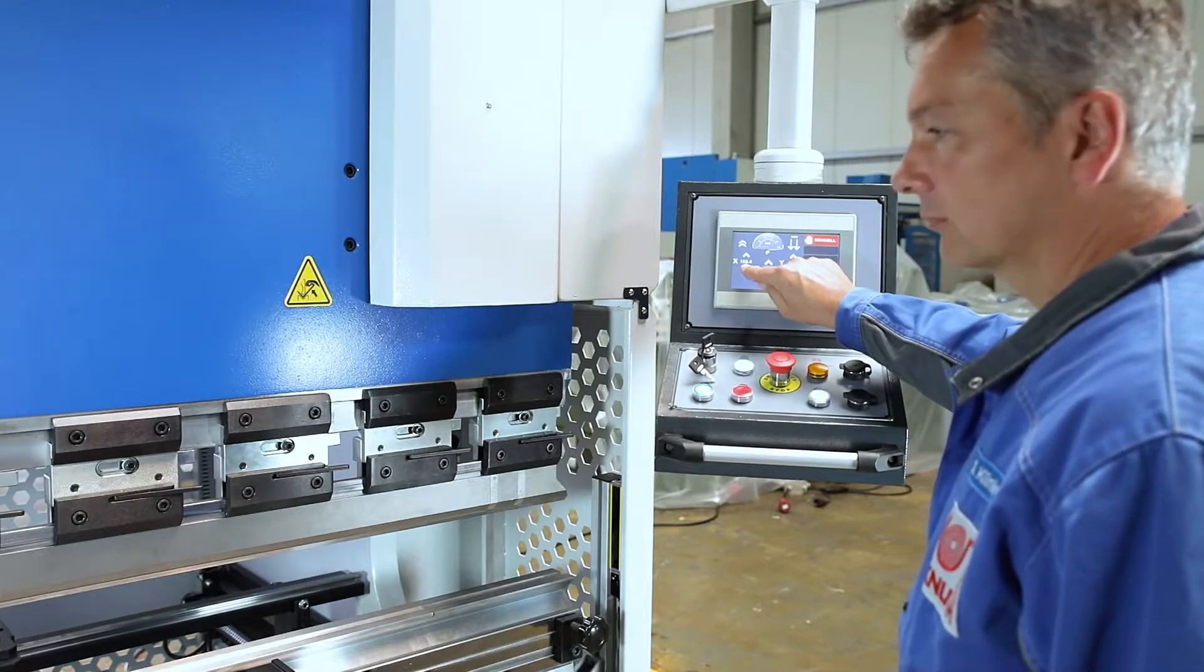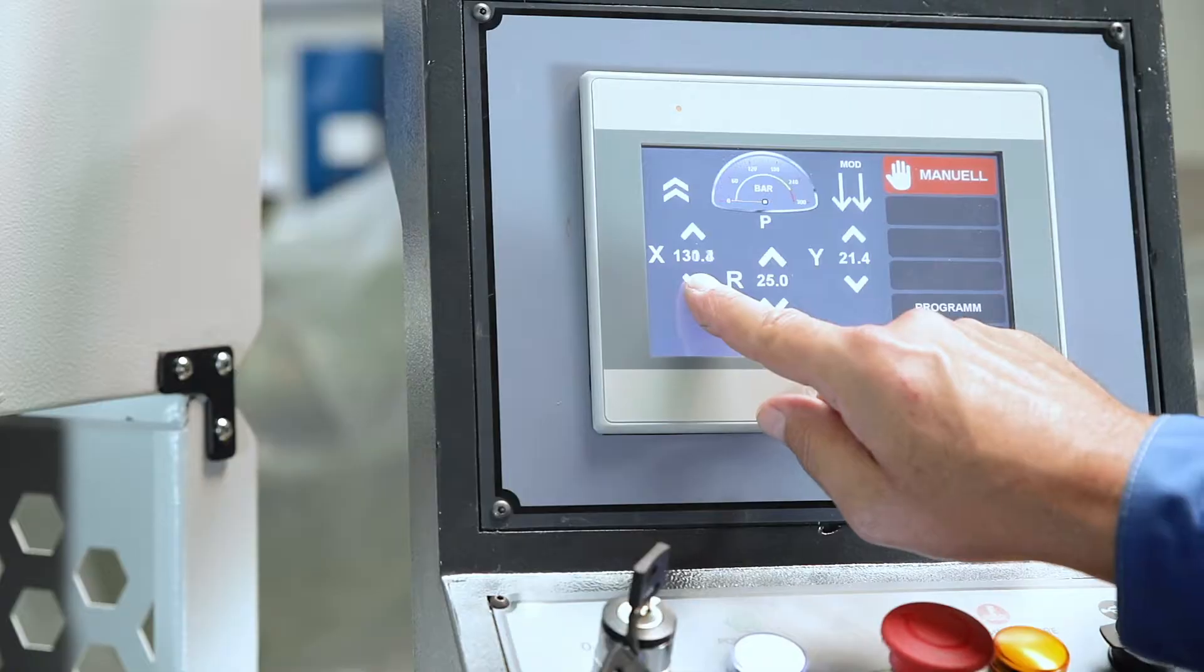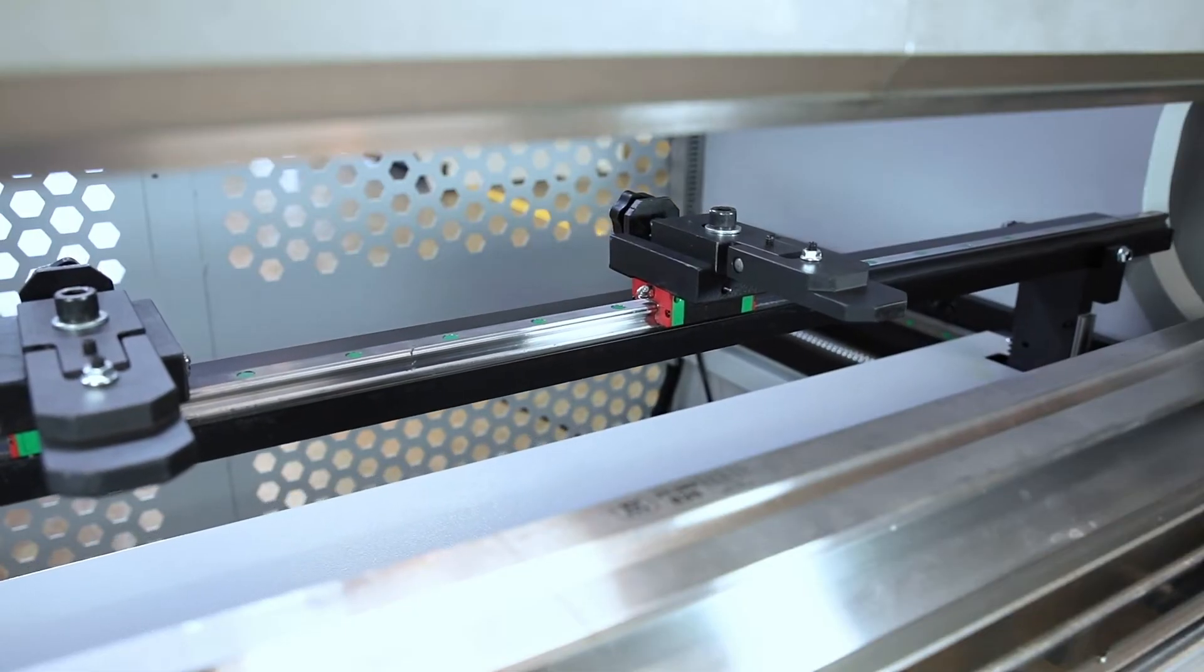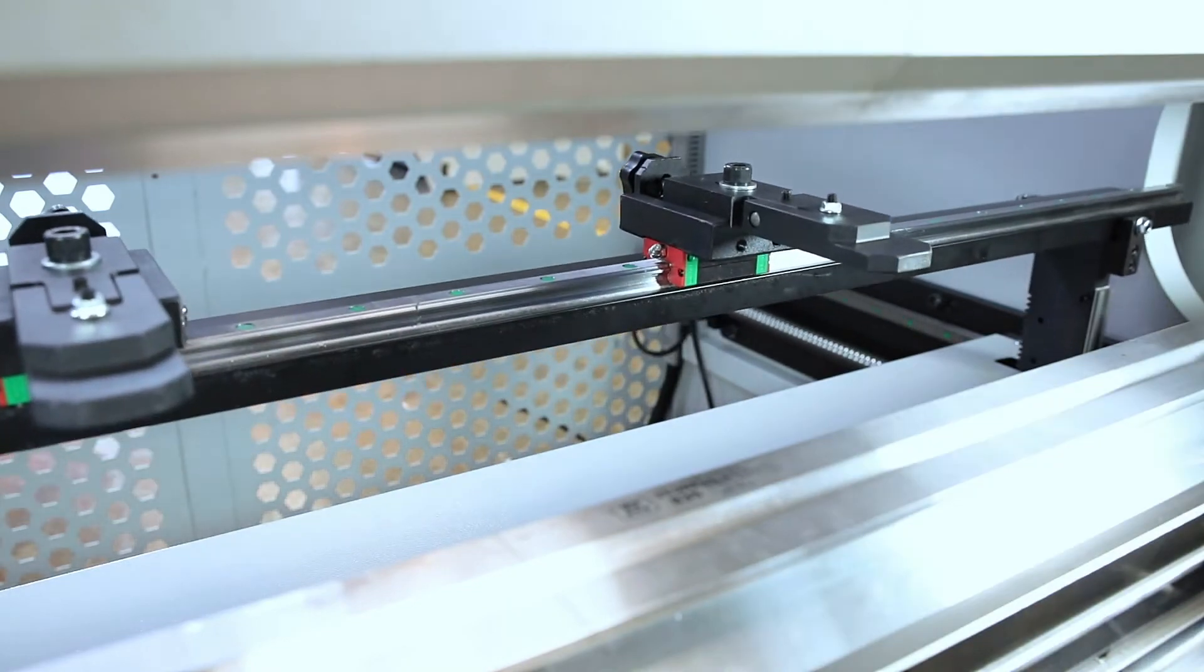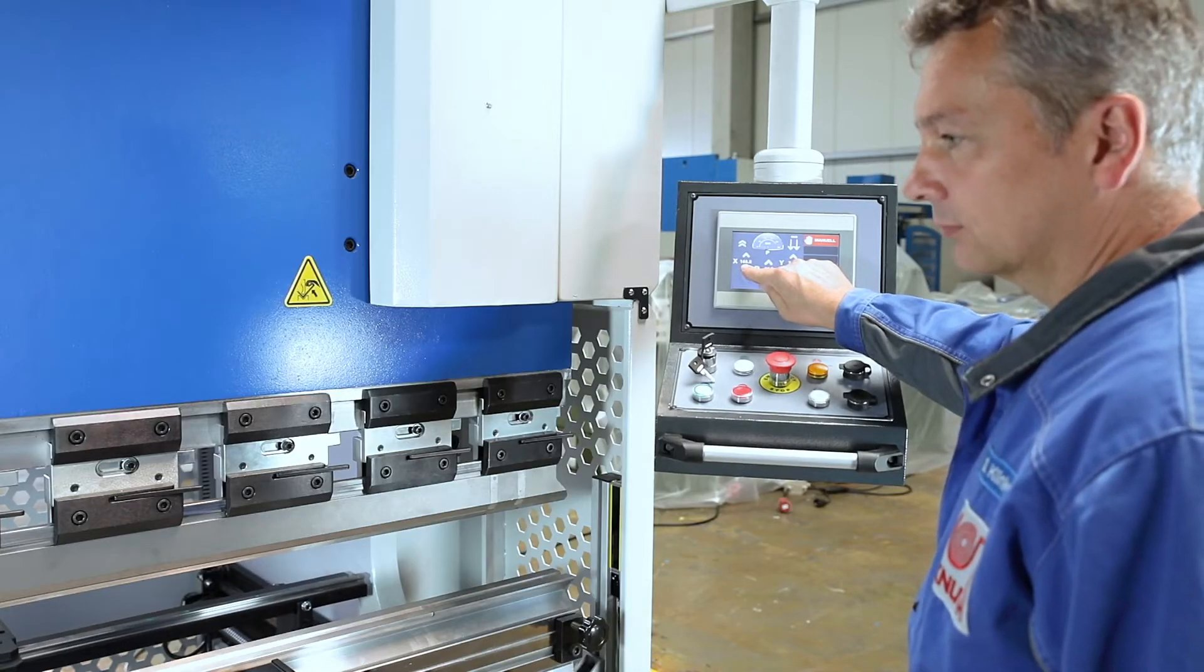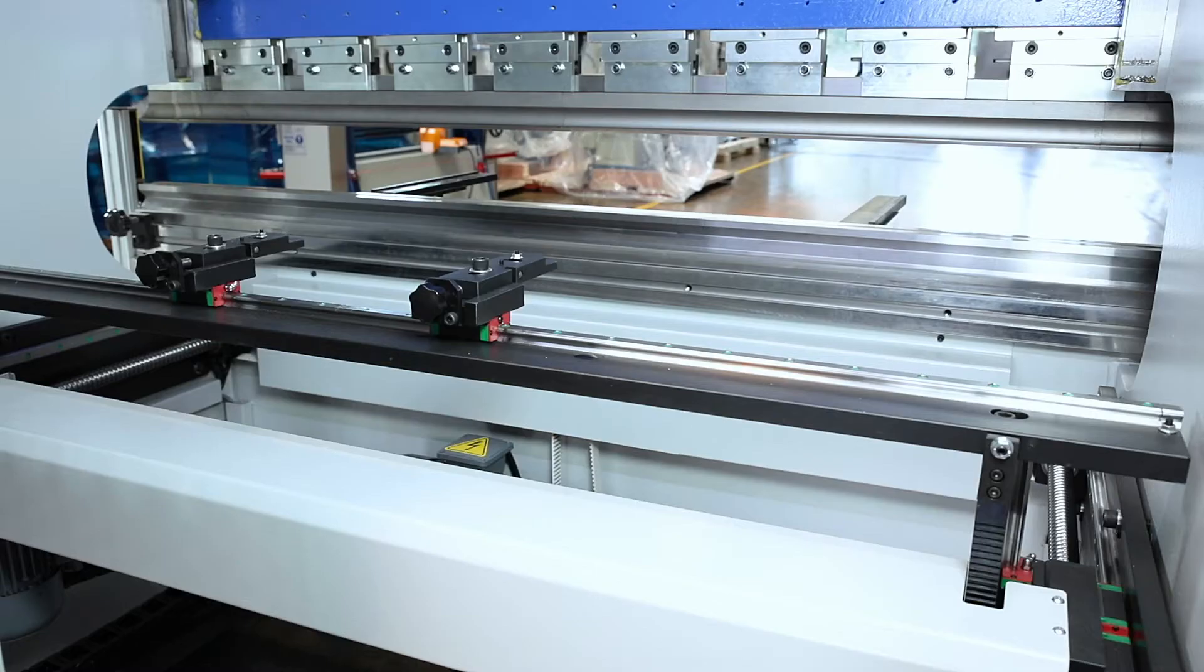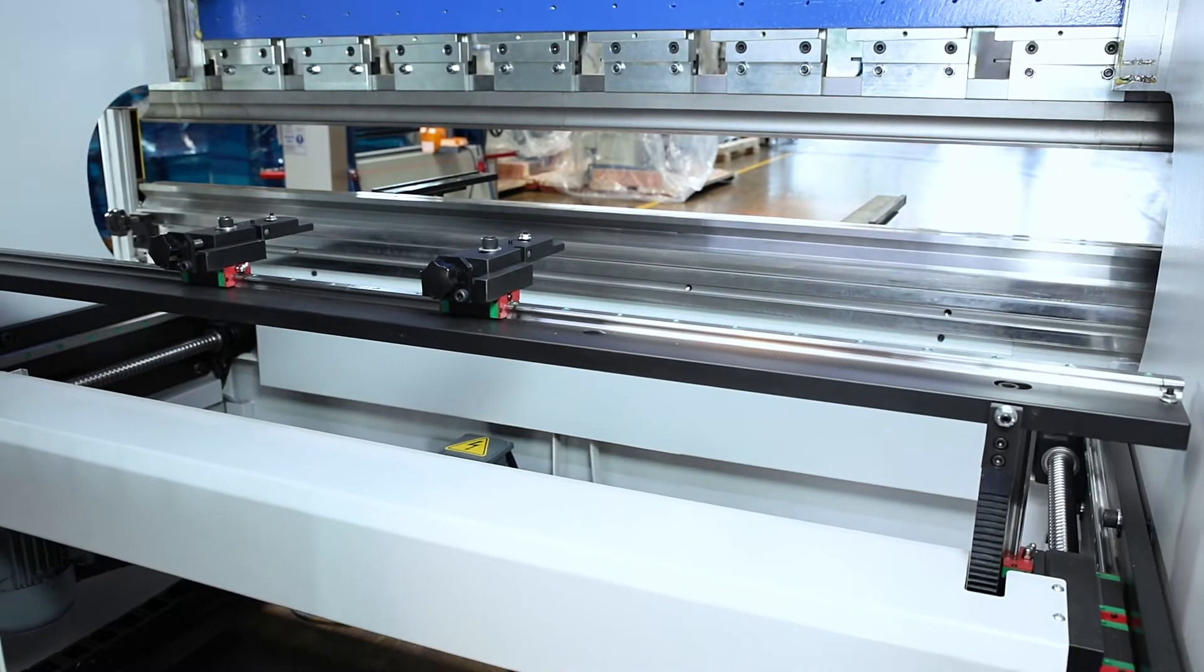All functions are entered and called up directly on the touch screen of the control unit. In manual mode, all axes can be positioned by motor and the set values are shown on the display. In semi-automatic mode, the values entered by the operator are processed directly.